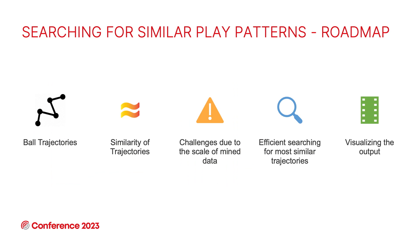To start with, how do we define a play pattern? In this work, we define this as the trajectory of the ball movement within one team's possession — the passes and the carries. Given this definition, a natural question is: how do we compare any pair of ball trajectories? And there are challenges due to the scale of data — how do we efficiently and as fast as possible find these similar play patterns, and finally, how to visualize the output?